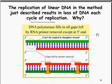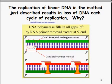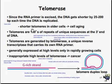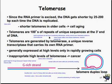The replication of linear DNA results in a loss of DNA each cycle of replication. That's because there are always gaps at the ends that can't be copied to the daughter strand because they have to be filled in by primers. Since the RNA primer is excised, DNA gets shorter by 25 to 200 base pairs each time the DNA is replicated. This means older cells have shorter telomeres — a result of cell aging.